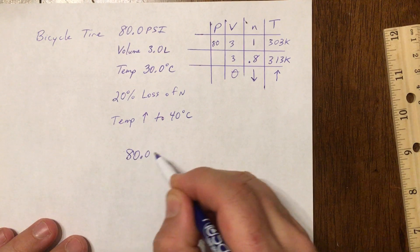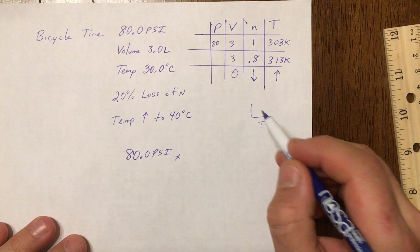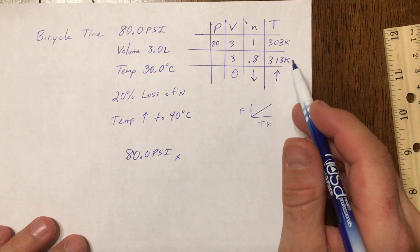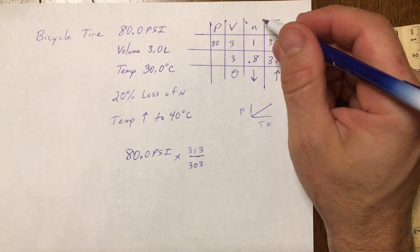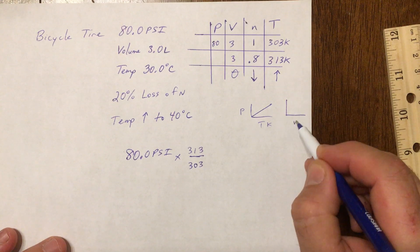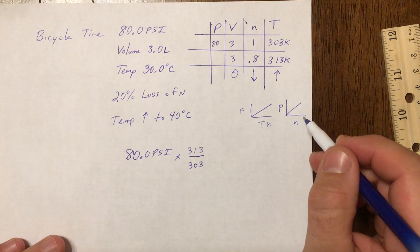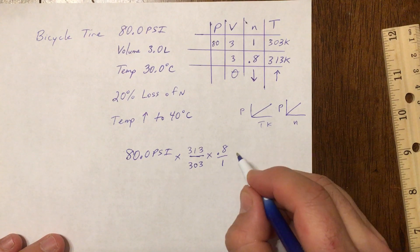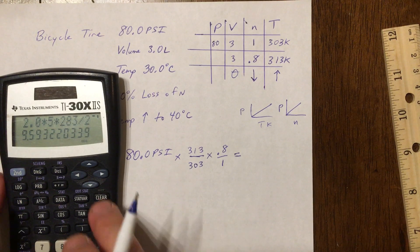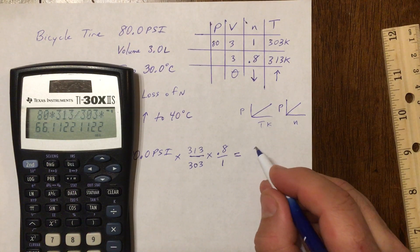What is going to be my new pressure? Take 80 psi and deal with the temperature change first. Temperature and pressure in Kelvin have a direct relationship, so an increase gives a factor of 313 over 303. Then I get a 20% loss of particles — particle number and pressure also have a direct relationship, so decreasing particle number means pressure comes down, giving a factor of 0.8 over 1. So: 80 psi times 313 divided by 303 times 0.8 gives a new pressure of 66.1 psi.